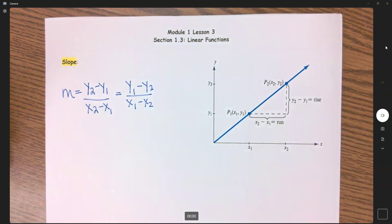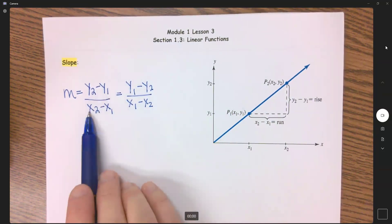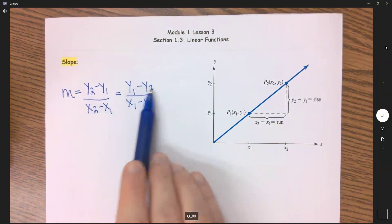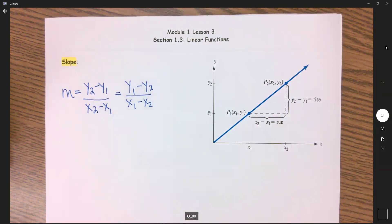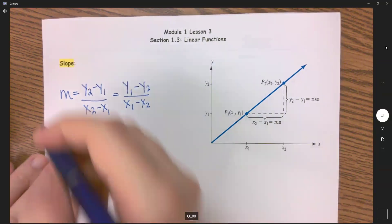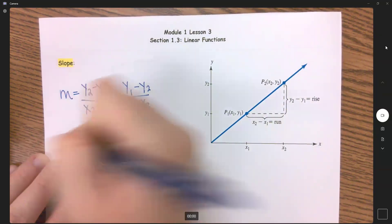It doesn't matter the order as long as you subtract in the same direction. So either 2 minus 1, 2 minus 1, or 1 minus 2, 1 minus 2. You get the same result no matter what.